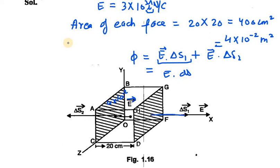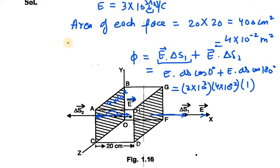The direction of ΔS₁ and E is the same, so the angle between ΔS₁ and E will be zero, giving cos 0°. For the second term, the angle between E and ΔS₂ is 180° since E is in this direction and S₂ is in the opposite direction. So cos 0° is 1, and we have E = 3×10³, ΔS = 4×10⁻².